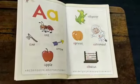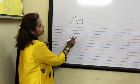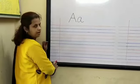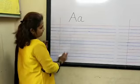Now let's see how to write small a. You will not write in the margin. You will write in the blue lines.